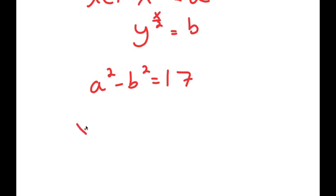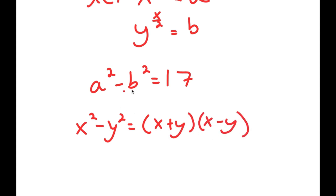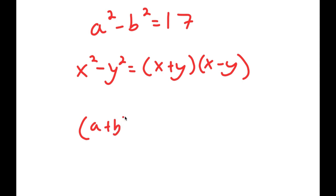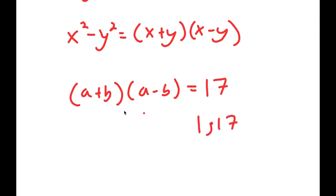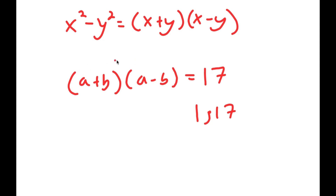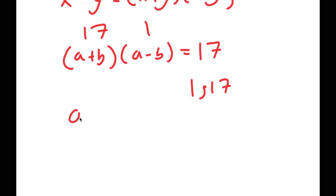Now, a squared minus b squared factors as a plus b times a minus b, using the difference of squares identity. So a plus b times a minus b equals 17. The only factors of 17 are 1 and 17, meaning one of these two expressions must equal 17 and the other must equal 1. Since a plus b is greater than a minus b, I get two equations: a plus b equals 17, and a minus b equals 1.